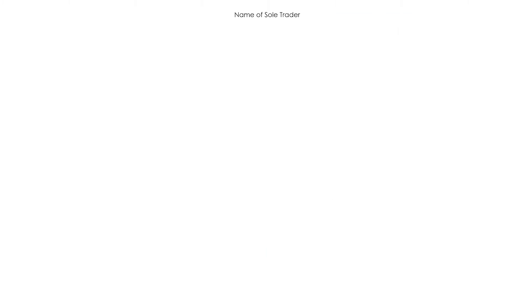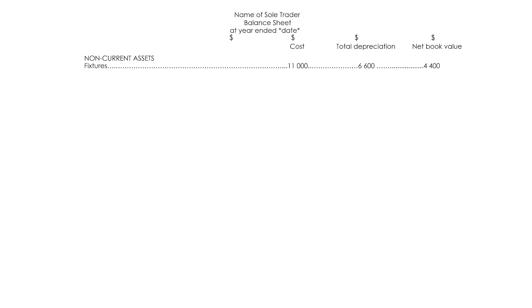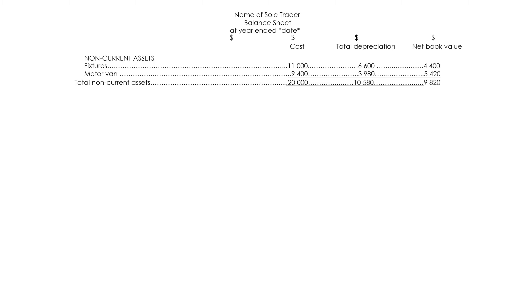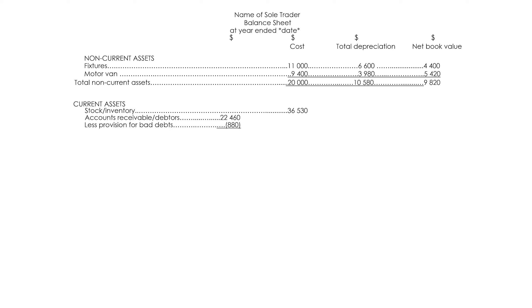Name of sole trader, balance sheet at year ended [date]. Dollar signs. Columns: cost, total depreciation, net book value. Non-current assets: fixtures, motor van. Total non-current assets. Current assets: stock or inventory, accounts receivable or debtors, less provision for bad debts.